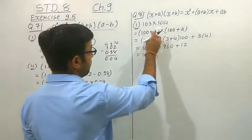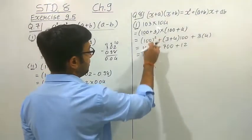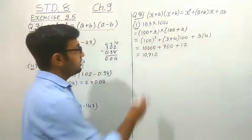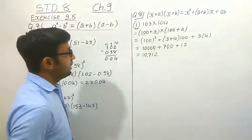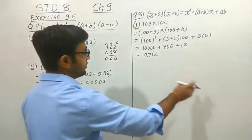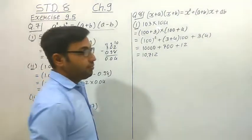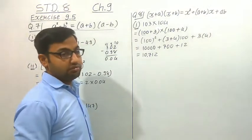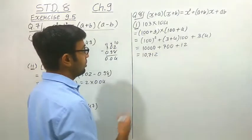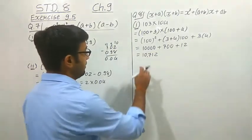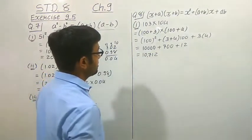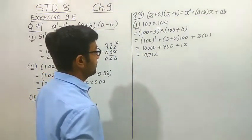Using only 3 to 4 steps we can calculate this value. When we do multiplication directly, we may sometimes make mistakes and get a wrong answer. But here using the identity, we get the perfect, actual answer.